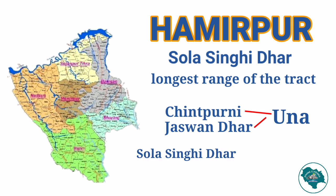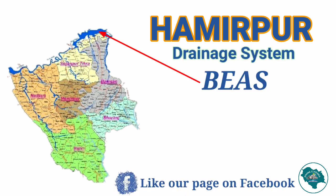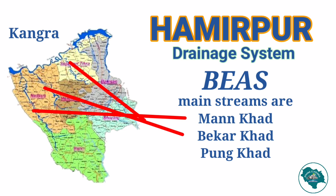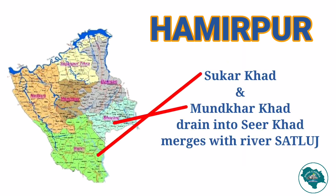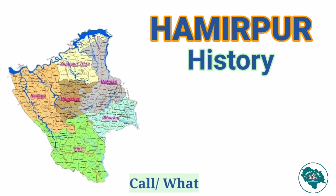Sola Singhi dhar is known under various names such as Chintapurni and Jaswa dhar in Una, and Sola Singhi dhar in Hamirpur. When we talk about the drainage system, Beas is the main river which forms the boundary of Hamirpur with Kangra. Its main streams are Man-khat, Bekar-khat, and Pung-khat. Sukarkhad and Mundkar-khat drain into Sirkhat, which ultimately merges with river Sutlej.